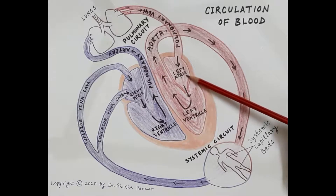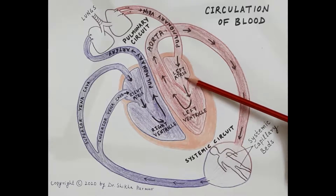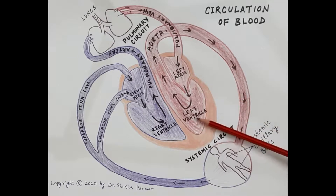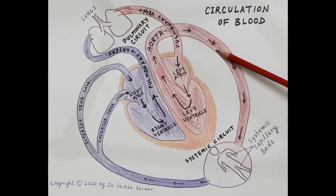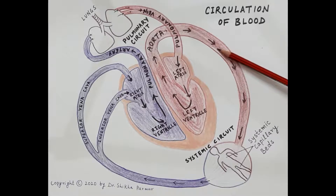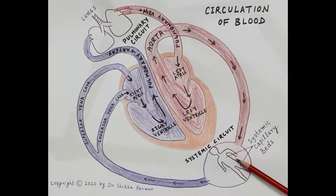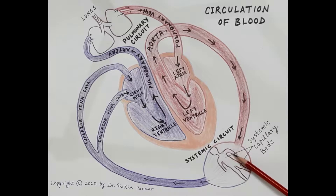It is the left atria which has received the oxygenated blood. When the left atria contracts, the oxygenated blood is pumped into the left ventricle, and when the left ventricle contracts, this oxygenated blood is pumped into the aorta. The aorta is the largest artery of the body and its function is to supply the body tissues of the entire body with oxygenated blood. Oxygen is then consumed by the body cells and the blood gets deoxygenated.